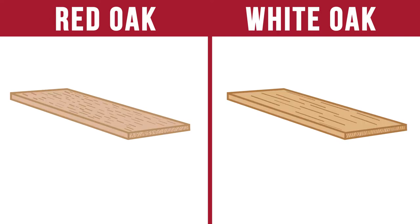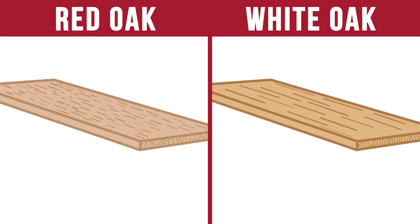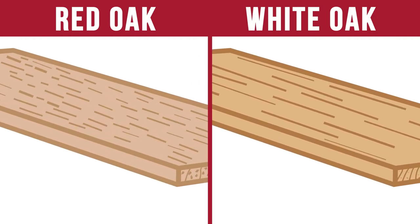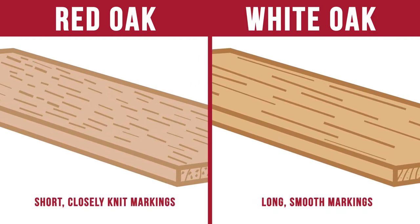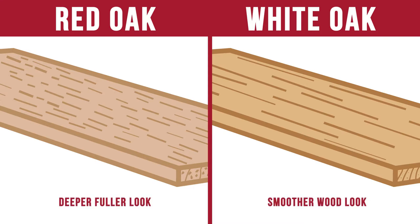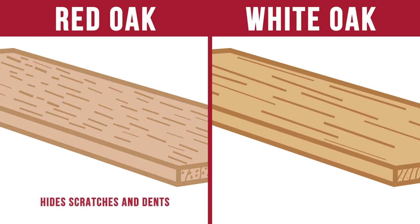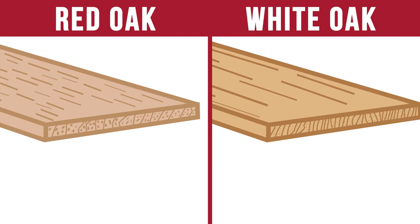You can also see a difference in the grain patterns on the face of the board. Red Oak tends to have stronger graining with shorter, more closely knit markings than white oak. These differing grain patterns can play a major role in the final look of your floor. Red Oak tends to give you a deeper, fuller look than white oak, and the strong grain pattern tends to help hide scratches and dents more easily.